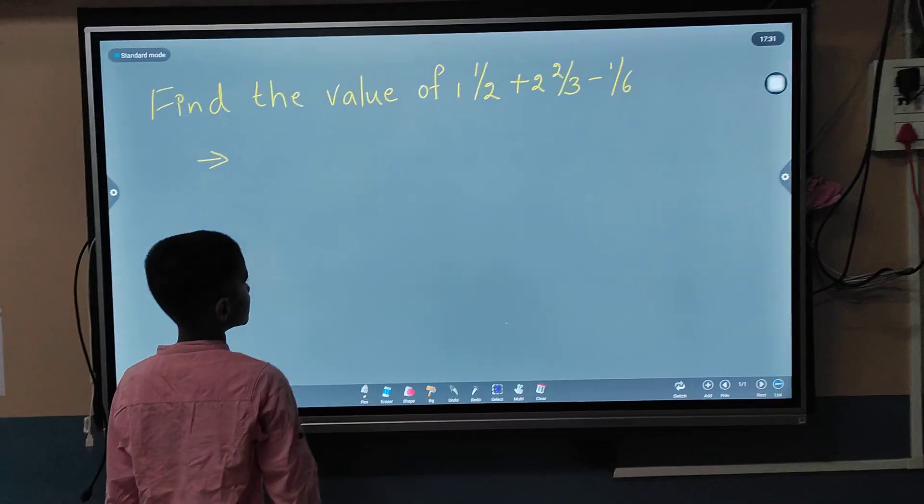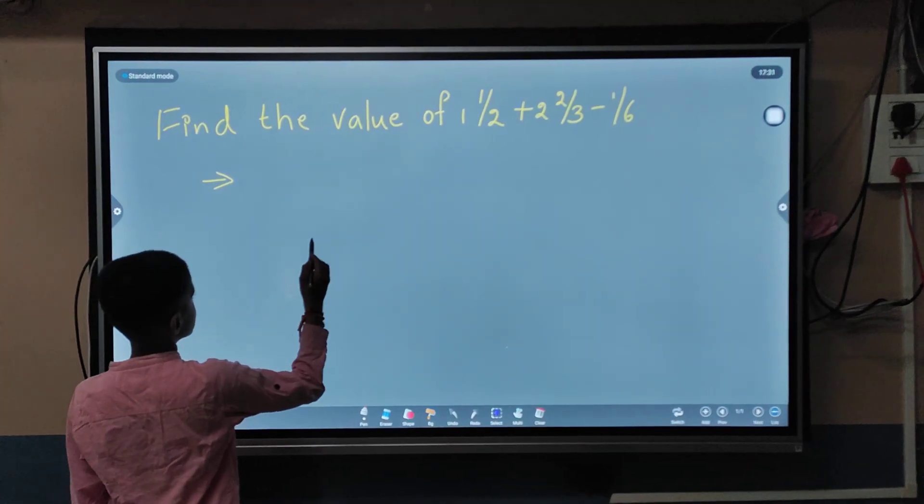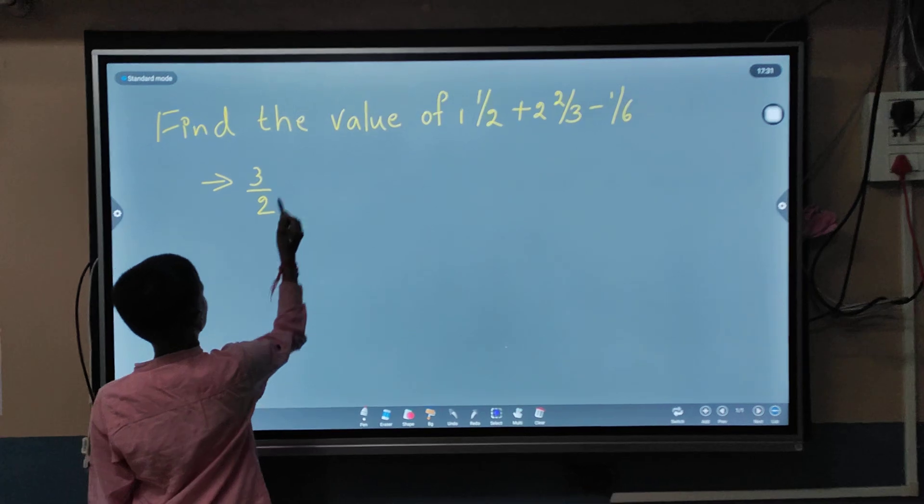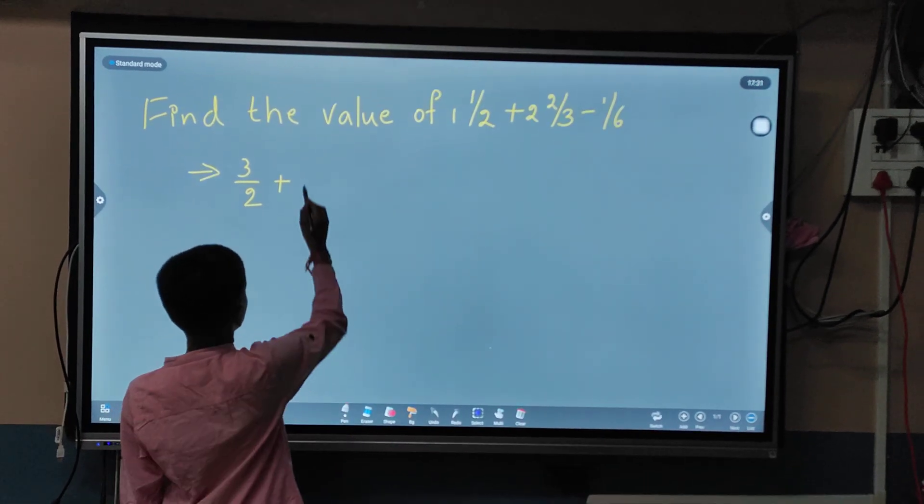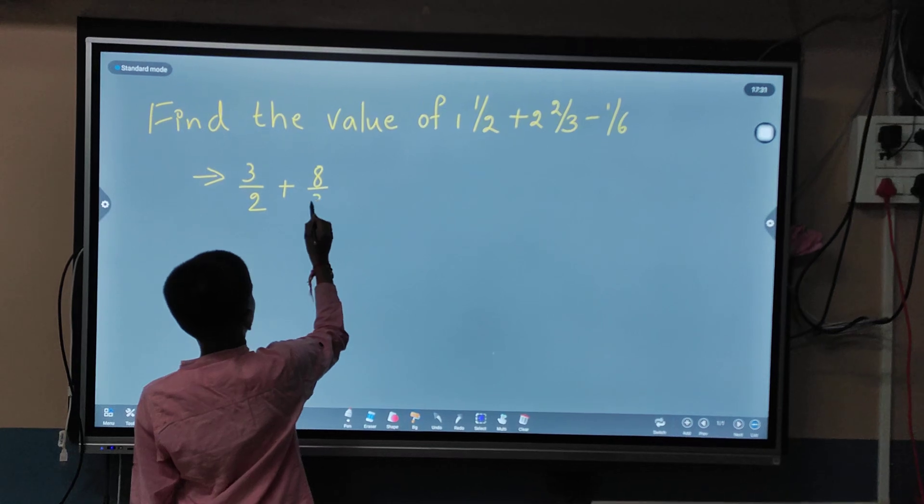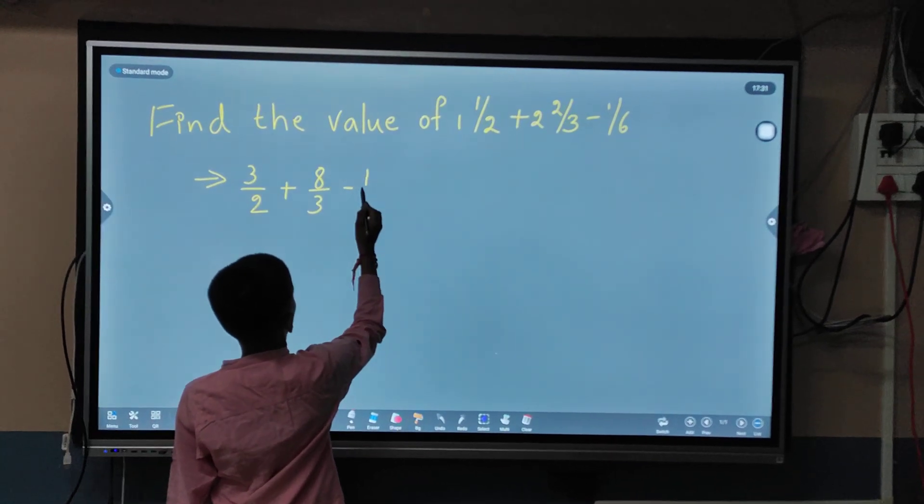For mixed fractions, we should convert them to improper fractions. 2 times 2 plus 1 equals 3, so that's 3/2. Plus, 3 times 2 is 6, plus 2 equals 8, so that's 8/3, minus 1/6.